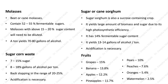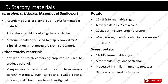The next category of raw materials includes starchy materials. Jerusalem artichokes, a species of sunflower, are an abundant source of alcohol with 16 to 18% fermentable materials, yielding about 25 gallons of alcohol per ton. Materials should be crushed to pulp and cooked for 2 to 3 hours. Dilution is not necessary because they already contain 79 to 80% water. Any starch-containing crop can be used; research has investigated potato, sweet potato, cassava and wheat. Potatoes contain 15 to 18% fermentable sugars.